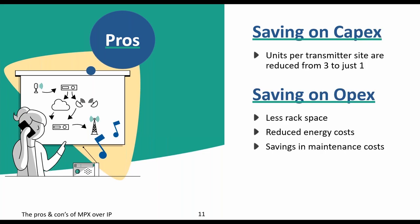What about capital expenses? CAPEX shows how much investment is required to purchase equipment. Because of 2WCOM's modular and compact design, their MPX over IP solution requires only one unit at the transmitter site. Regarding operational expenses — OPEX — the reduced number of units means less rack space and energy cost per transmitter site. Fewer units also means less rack space rental and maintenance cost. Please contact your service provider to calculate the exact savings in operational expenses.